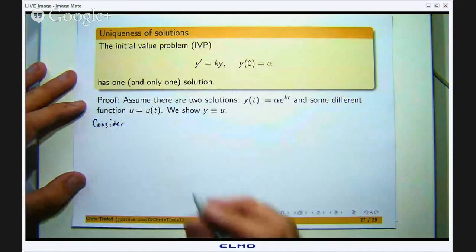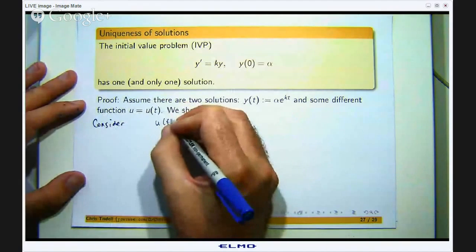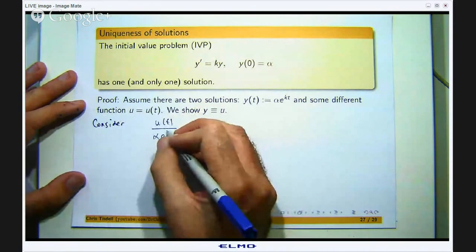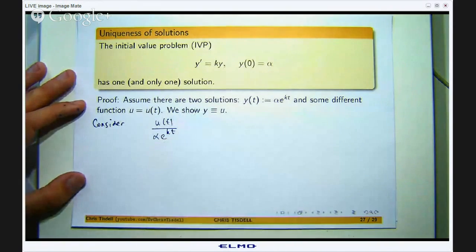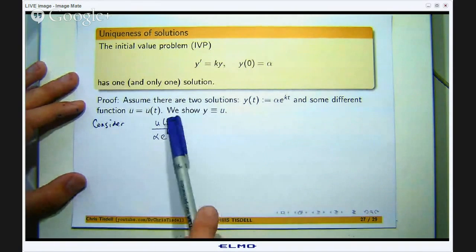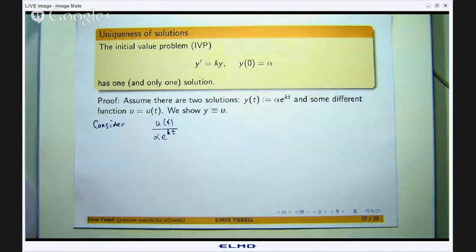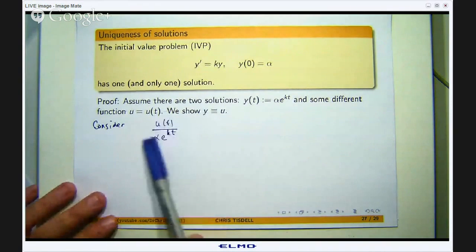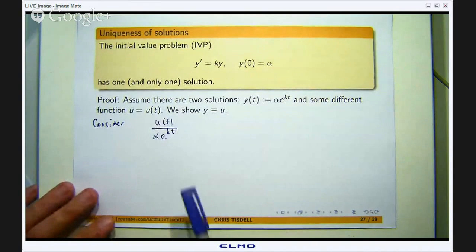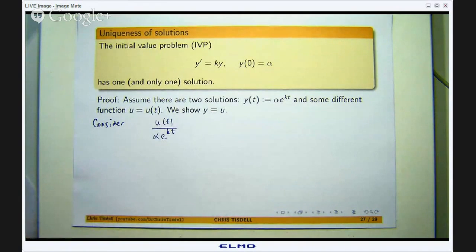Alright so how do we do that? We are going to consider the following ratio: u/(αe^(kt)). Okay now I am going to show that this ratio is always equal to 1 independent of t. How do I do that? Well I am going to show that this has a derivative that is 0 and then I am going to use the initial condition to show that the constant is indeed 1.